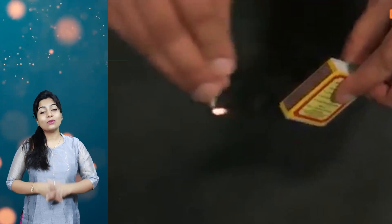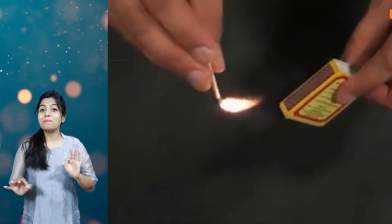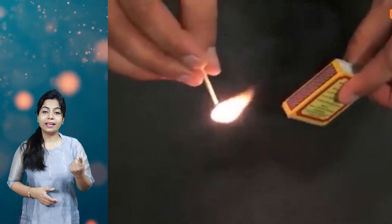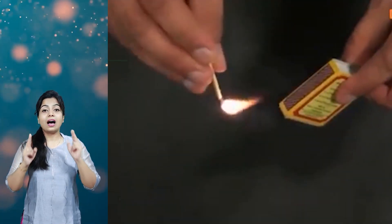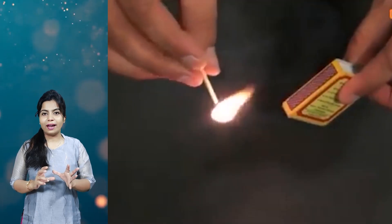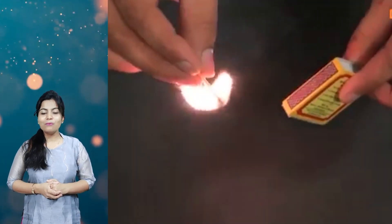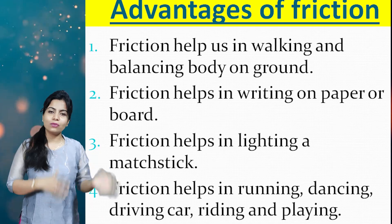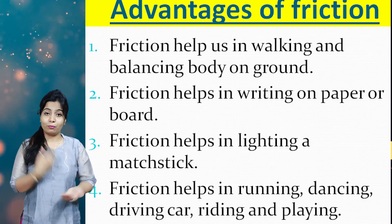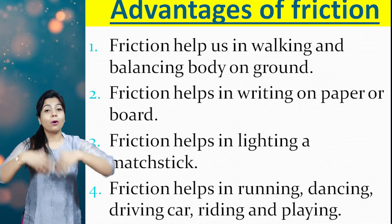The third use of friction is that we are able to light a matchstick with the help of friction. Two surfaces rub against each other and due to the roughness, the matchstick lights up. So friction is very useful in many cases — for proper walking, proper balancing of your body, and proper dancing.